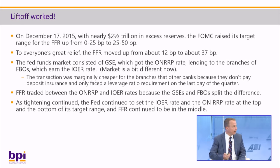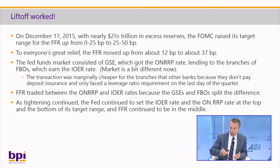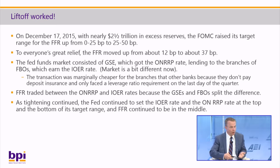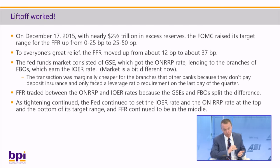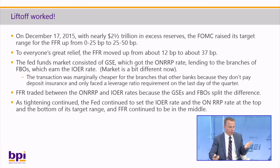The Fed funds market at that point consisted largely of GSEs that got the overnight RRP rate — 25 basis points below IOER — lending those funds to the branches of foreign banking organizations (FBOs), which earned the IOER rate. So it was a straight arbitrage between those two. The federal funds rate traded between the overnight RRP rate and IOER because the GSEs and the FBOs split the difference.